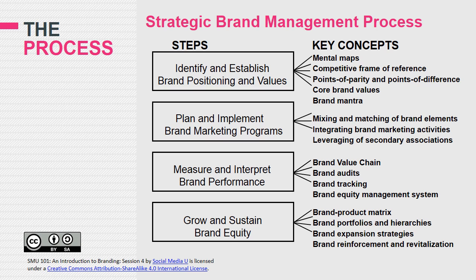The second step of the brand management process is the planning and implementation of brand marketing programs, and this has three concepts. The first concept is choosing brand elements. Different brand elements include things like logos, images, packaging, symbols, slogans, etc. Since different elements have different advantages, marketers prefer to use different subsets and combinations of these elements. The combination you choose depends on the messages you choose to send about your brand, the benefits and advantages you want to communicate, as well as your overall business strategy.